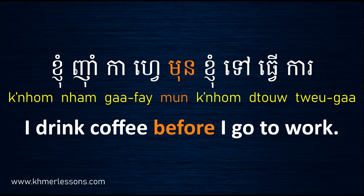Example: I drink coffee before I go to work. In Khmer: Knhom Nham Cà Phé Munn Knhom Tây Thvơ Ca. You can also say Munn Perl instead of just Munn — both are correct. In this sentence you have two activities: first you drink coffee, and then you go to work.